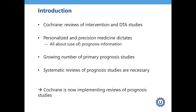Personalized and precision medicine is asking for proper prognosis information. This coincides with a growing number of primary prognosis studies in the literature, expanding and even outweighing randomized trials and diagnostic test accuracy studies. As primary prognosis studies increase, we need to systematically review and aggregate them and provide meta-analysis where possible. Cochrane is now implementing reviews of prognosis studies.